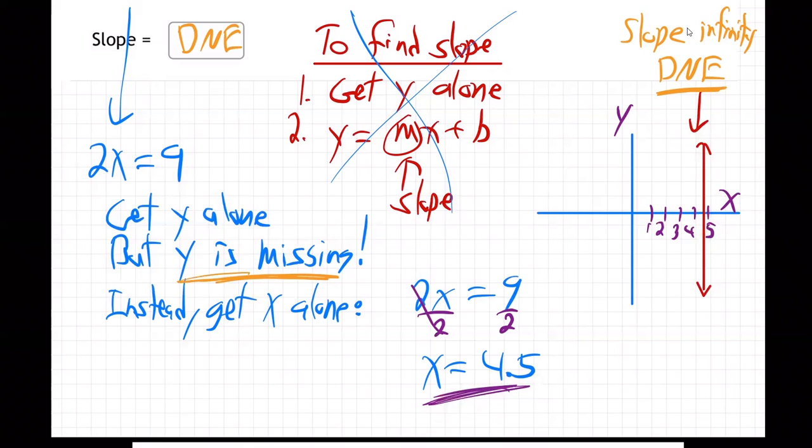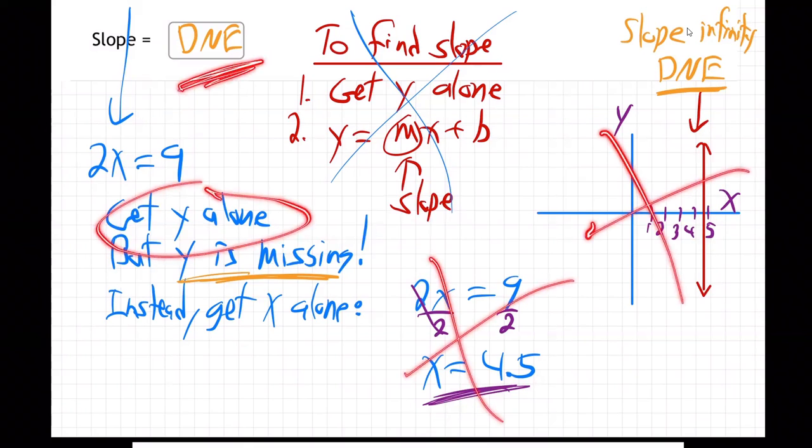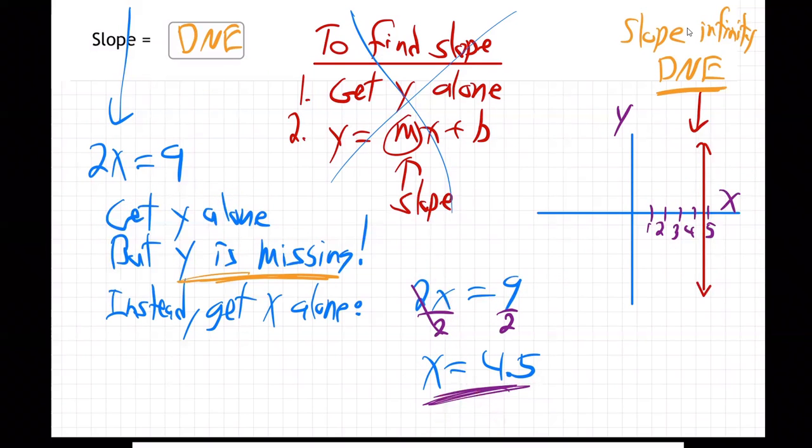Really, you can just skip this and just look: y is missing? DNE. That's fine. I just wanted to show you the bigger story, which is not required.